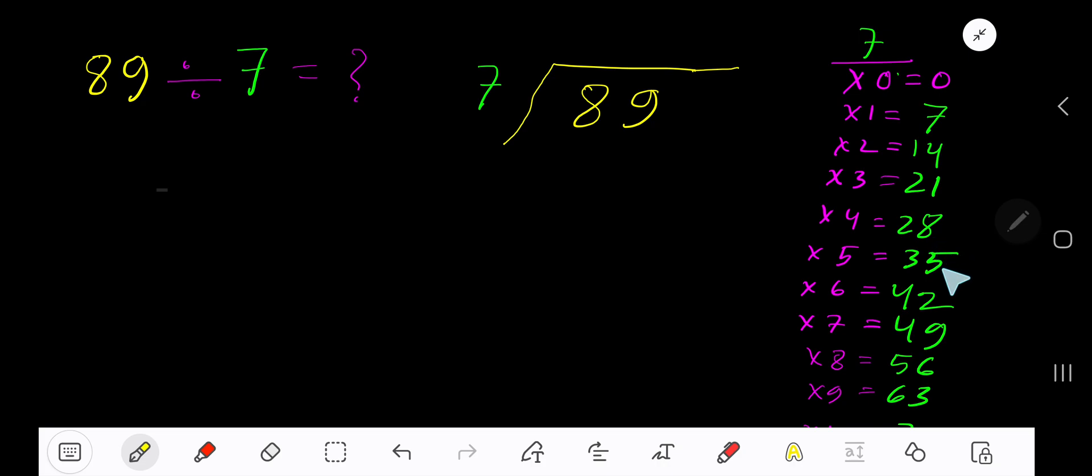21 plus 7 is 28, 28 plus 7 is 35. This process will continue. 7 goes into 8 how many times? One time.